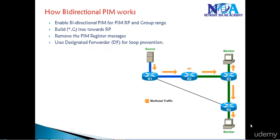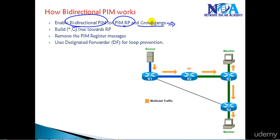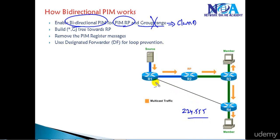Now let's see how Bidirectional PIM is going to work. The first step is to enable Bidirectional PIM on all the routers and define the RP and the group range for which we need to enable it. If you do not define the group range, by default it is going to apply to all Class D addresses. You can specifically define that Bidirectional PIM should only work for, say, 224.5.4.5, while all remaining groups use the shortest path — but that is not mandatory.